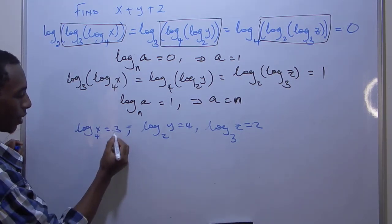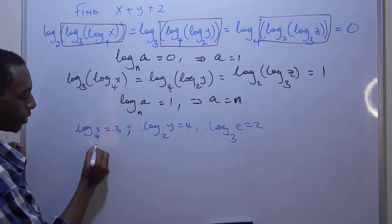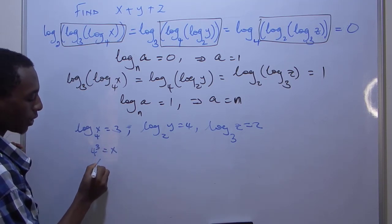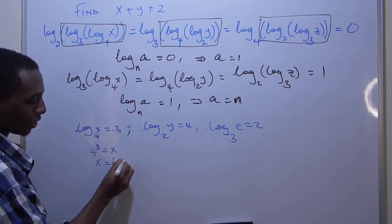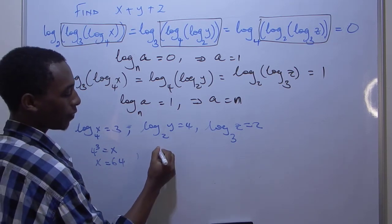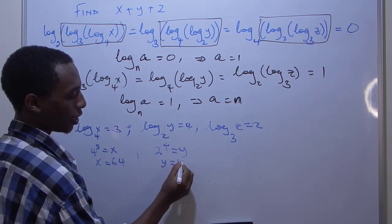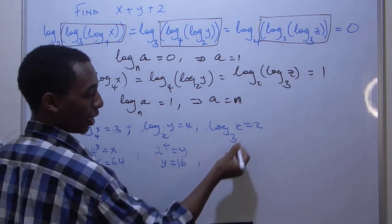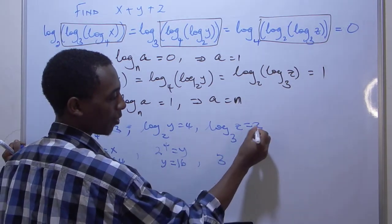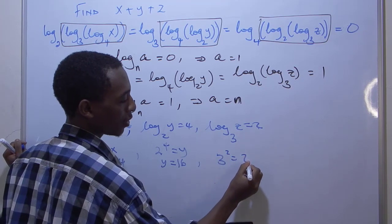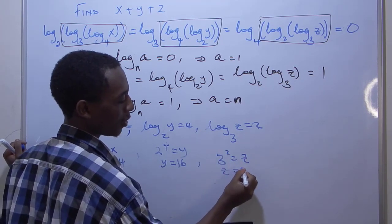So from here we can see that four to the power three equals x, which means x is 64. From here we have two to the power four equals y, which means y is 16. And from here we have three to the power two equals z.